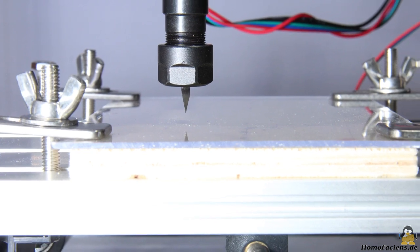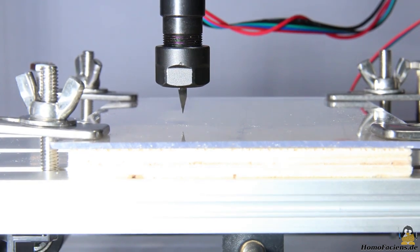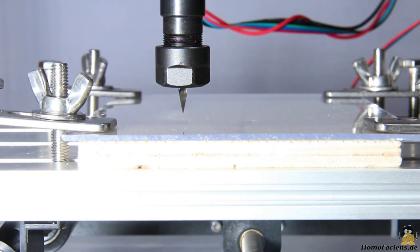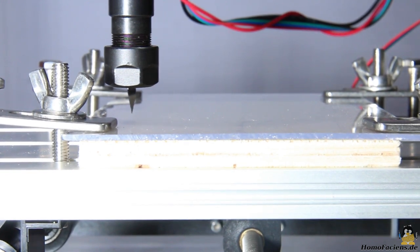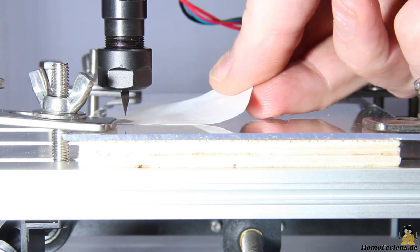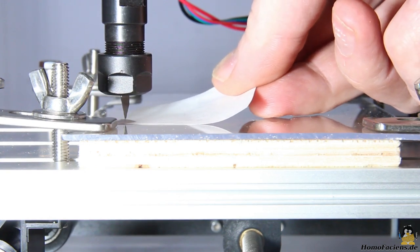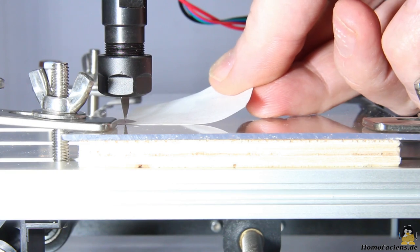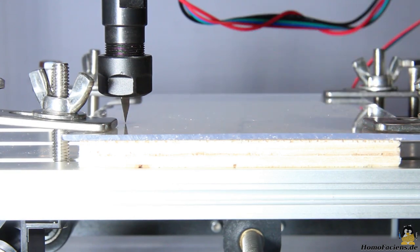I use the remote control to move the spindle to the zero point, which corner it is depends on the settings in the CAD software used, for this file it is at the bottom left. Now I carefully move the Z axis with the hand wheel down so far that the cutter almost touches the workpiece. A piece of paper helps to find this point.